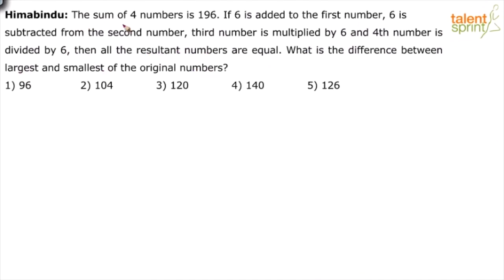So basically it says the sum of four numbers is 196. Let us assume these four numbers are A, B, C and D. So A plus B plus C plus D equals to 196.